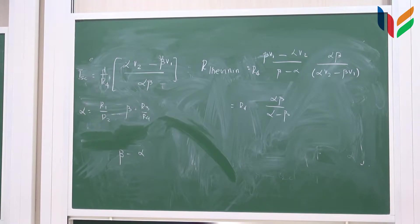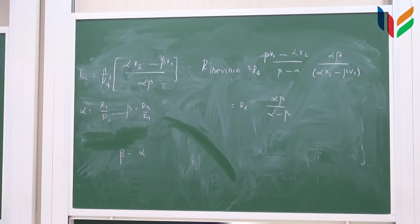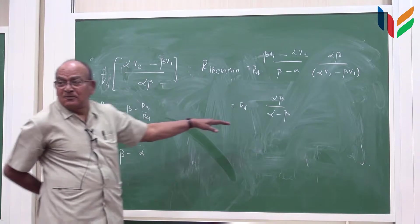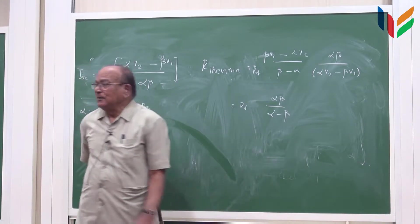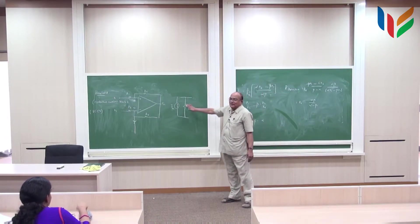If alpha is equal to beta then what happens to this? Infinity. So you get the ideal current source.